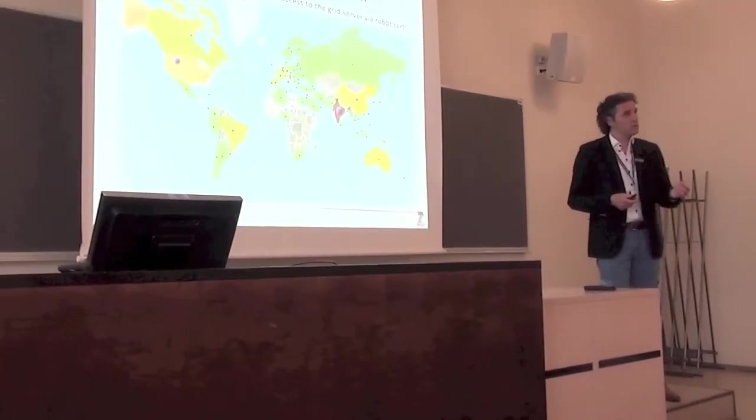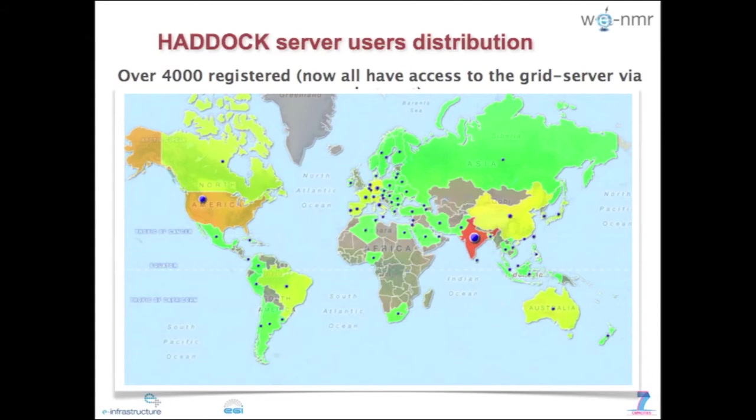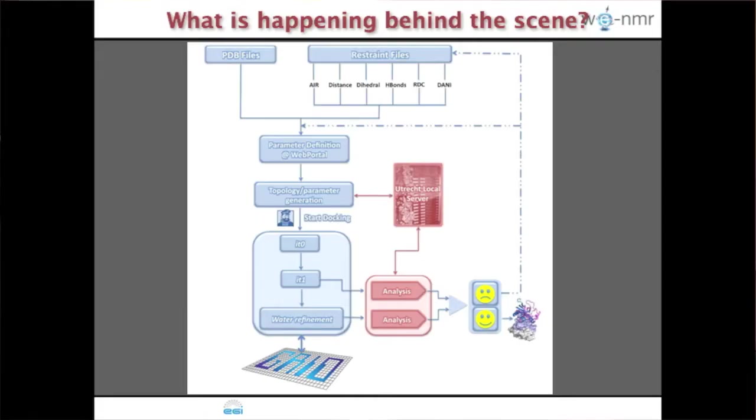Since recently, all users of the portal can also access grid resources. We use robot certificates to send jobs to the grid. Users registered with the VRC get access to grid resources. The users registered with the HADOC portal itself, since we know their identity, we are now giving them access as well to grid resources. In principle there are over 4000 people making use of the infrastructure.